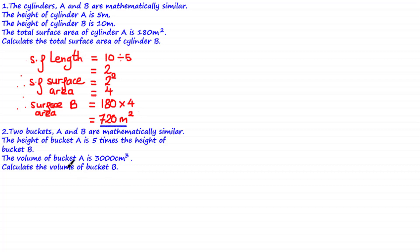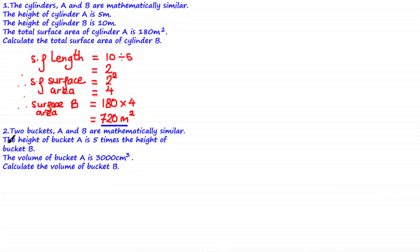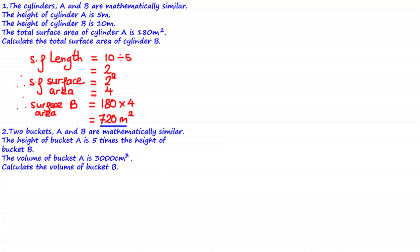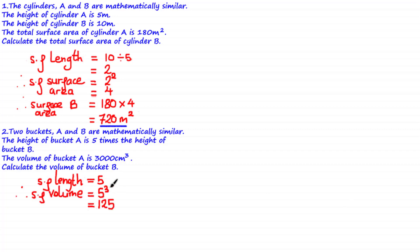Since buckets A and B are mathematically similar, there is a scale factor of volume we can use to calculate the volume of bucket B from bucket A. Since the height of bucket A is five times the height of bucket B, the scale factor of length is equal to 5. Therefore the scale factor of volume is equal to 5 cubed, which is 125.